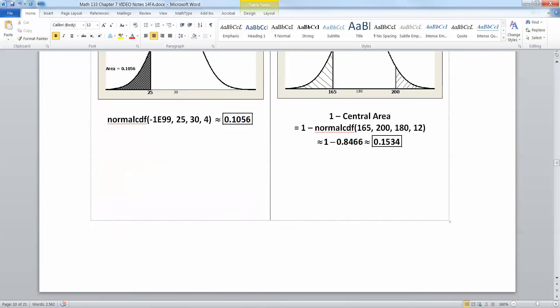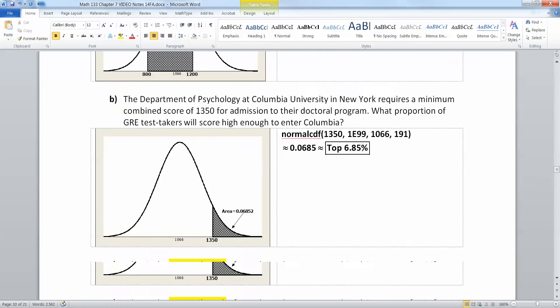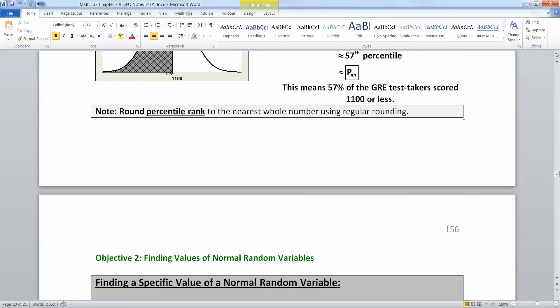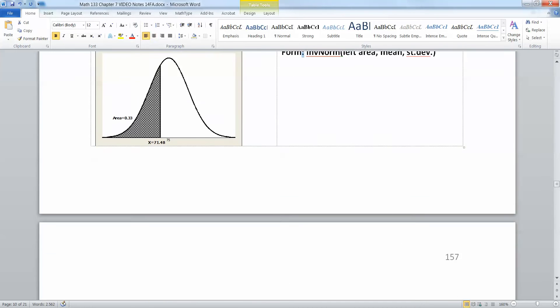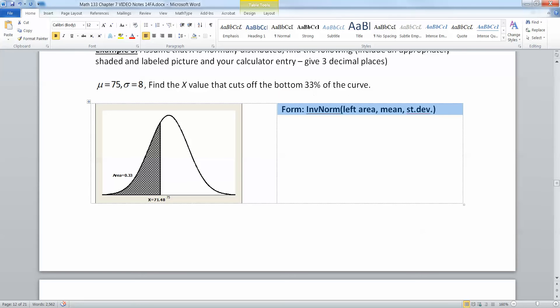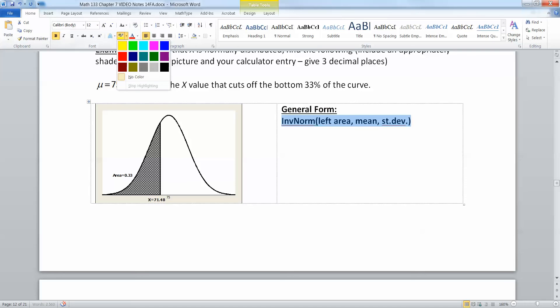And the general form for inverse norm always is the left tail area always, no matter what, you can't avoid it. So the left tail area, let me put that right here. General form. Okay, so it's going to be inverse norm, left tail area, comma, mean, comma, standard deviation. Always, always, always, it will follow that general form.